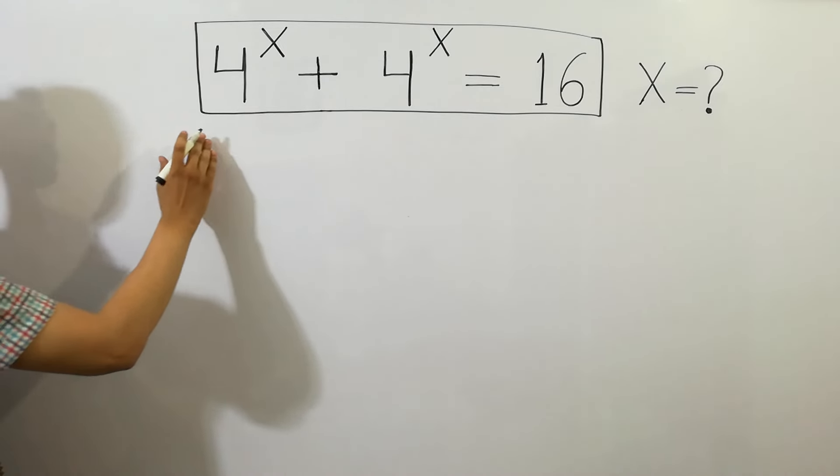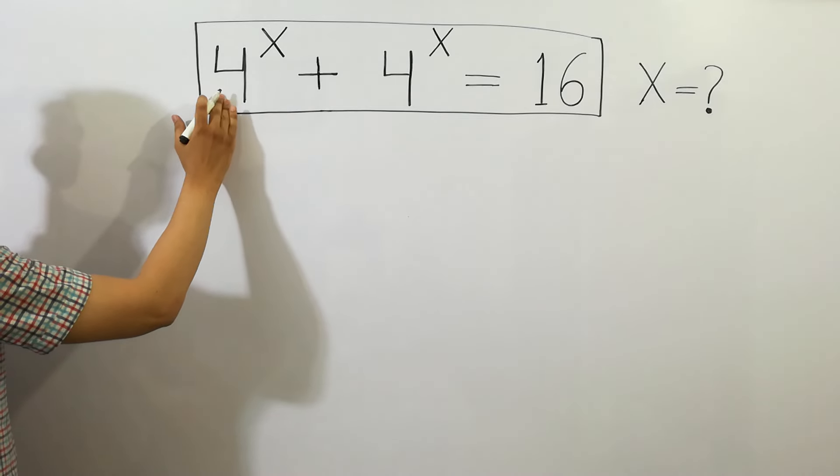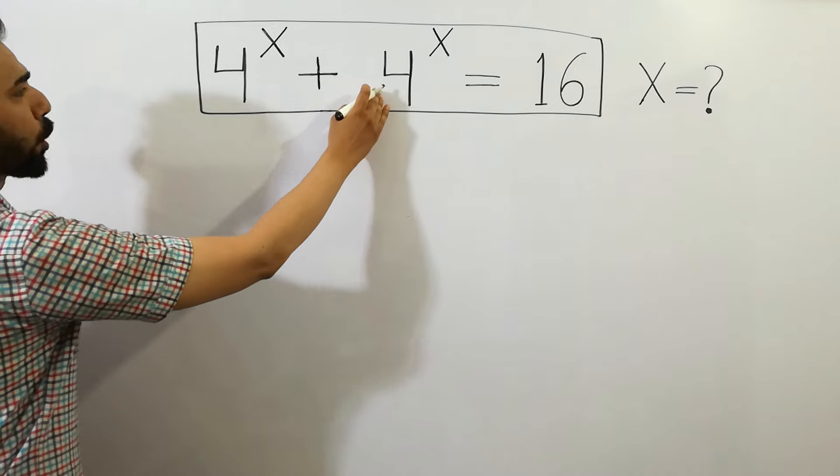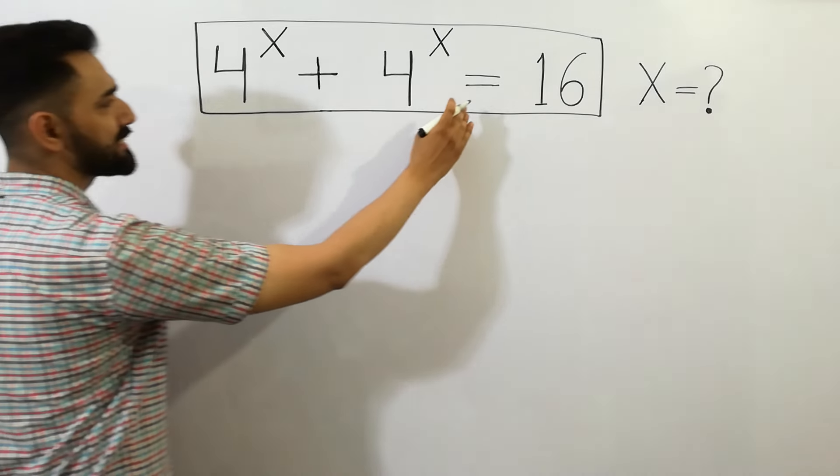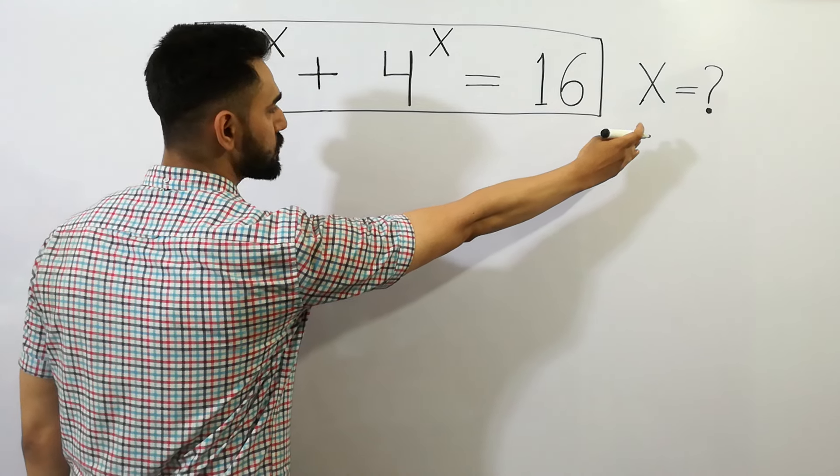Hey guys, we have a next math problem. 4 to the power x plus 4 to the power x equals 16. Then what would be the value of x?